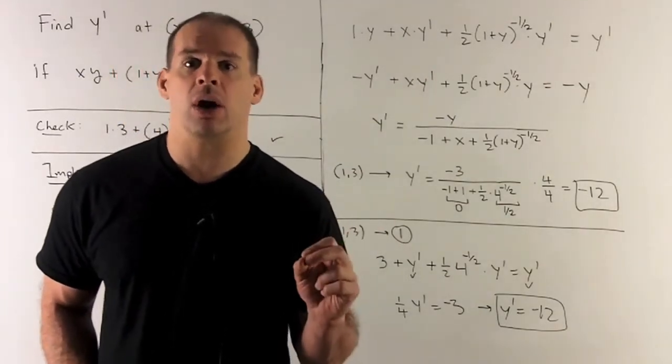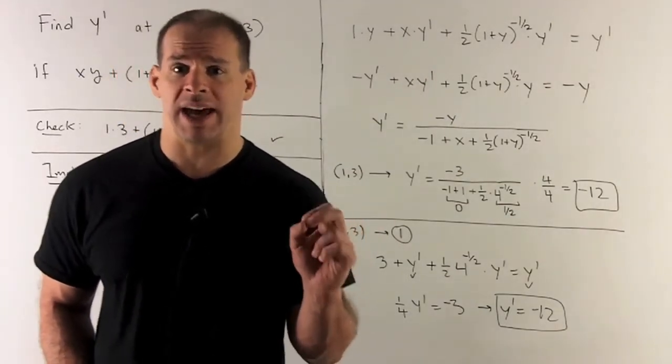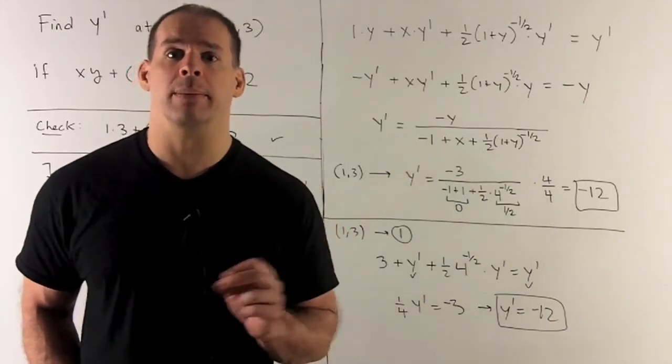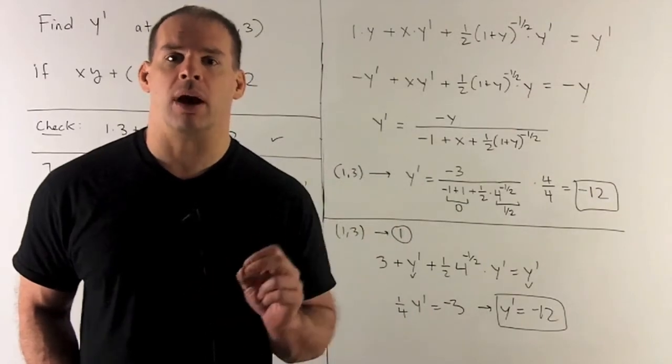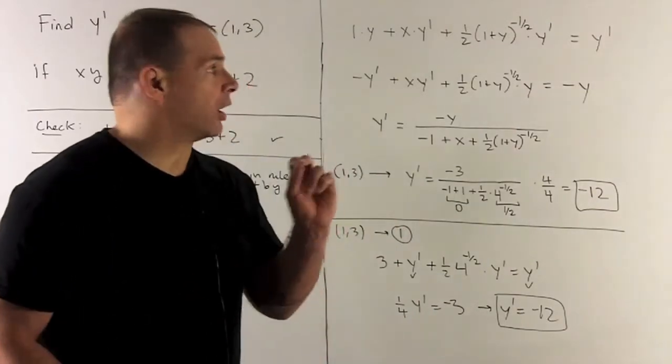The one goes to zero. Then derivative of y with respect to x is y prime. That's just your normal derivative. But now you multiply by y prime.